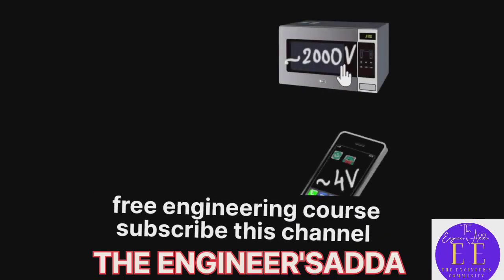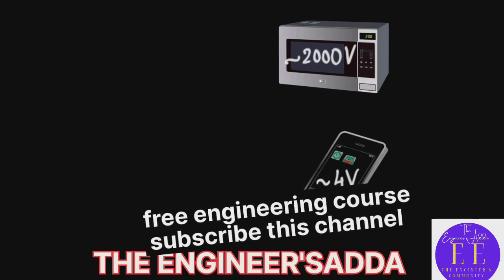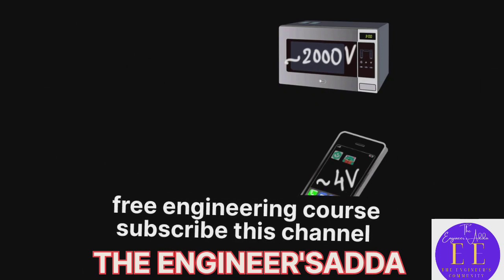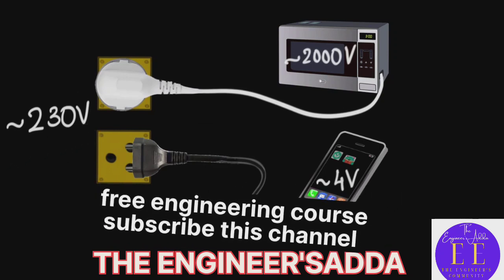How do you run a microwave oven that requires thousands of volts and a phone which requires very tiny amount of voltage by plugging them both into the same supply, 230 volts main supply?